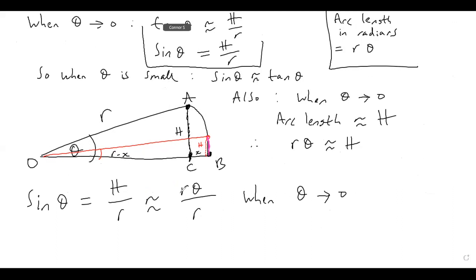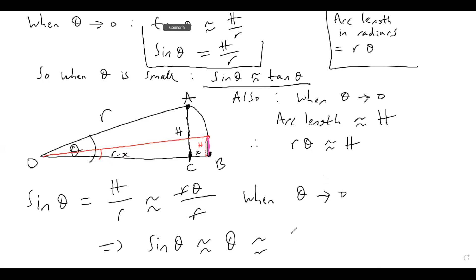Using this information, we know that sin θ = H/R, but that's approximately equal to Rθ/R when theta goes to zero. The R and R cancel out, so sin θ ≈ θ for small values of theta. And we get the same result with tan, because we showed that sin θ ≈ tan θ, so tan θ ≈ θ as well. That's how we get our results for small angles for sine and tan.